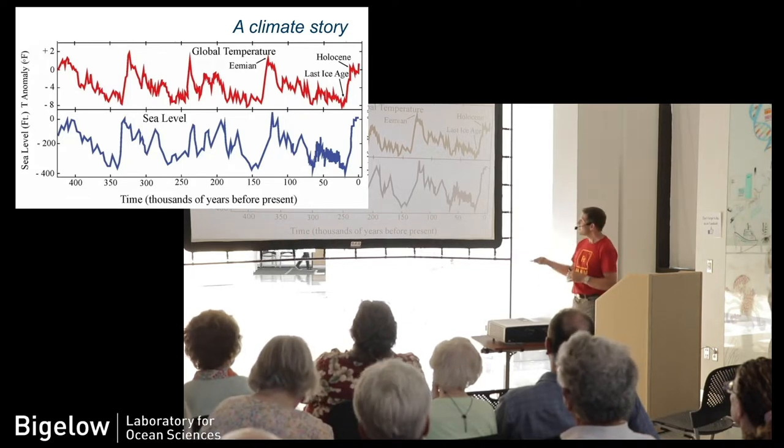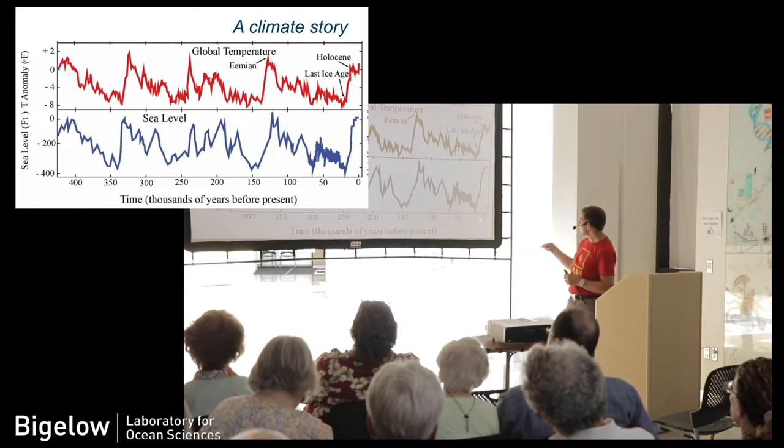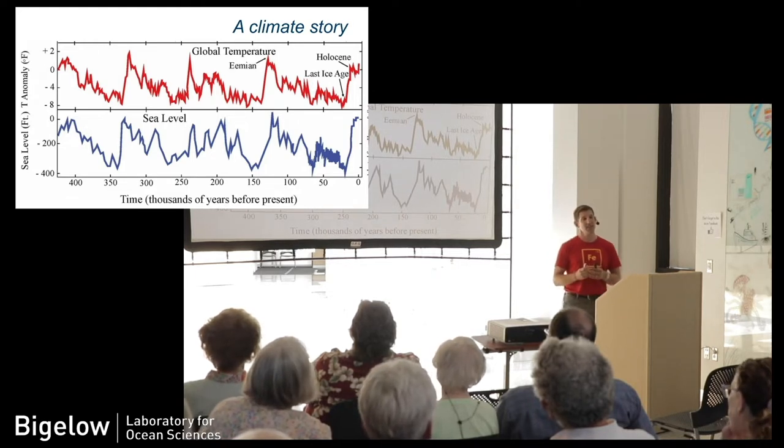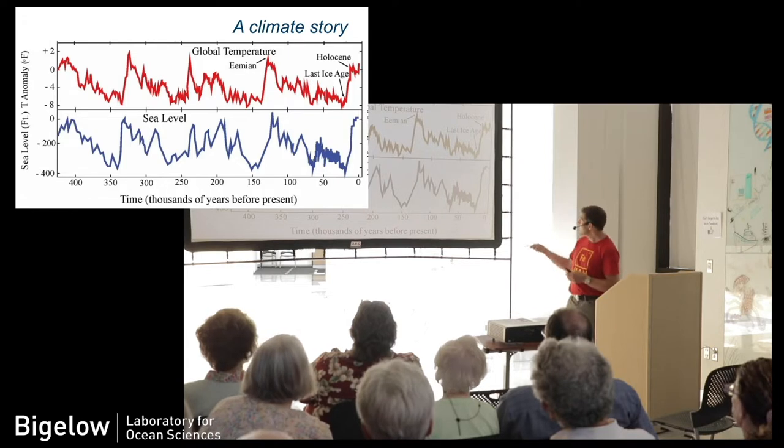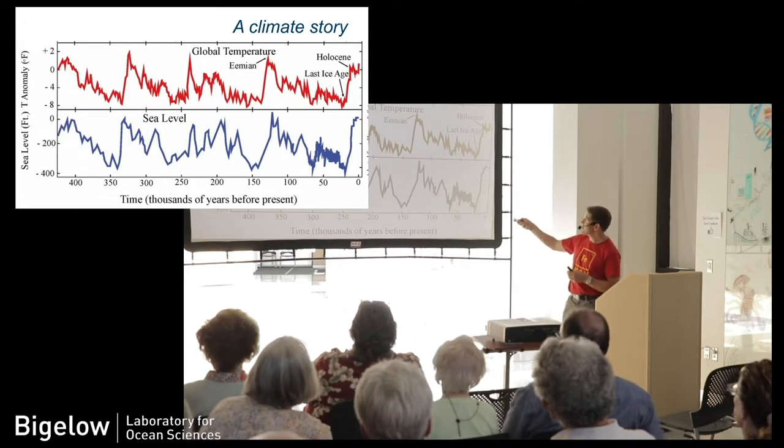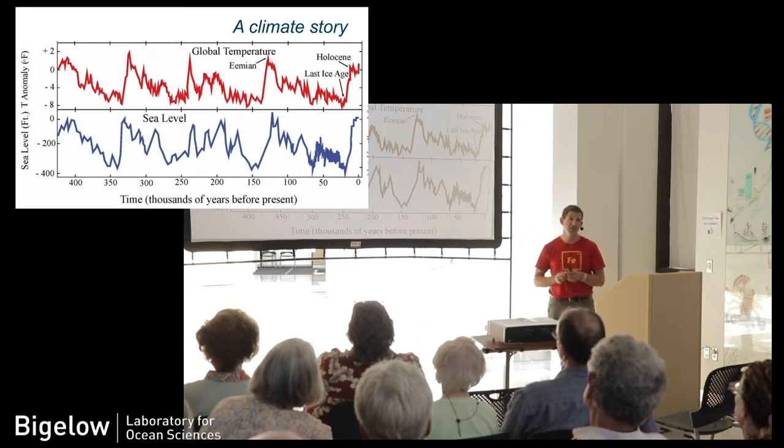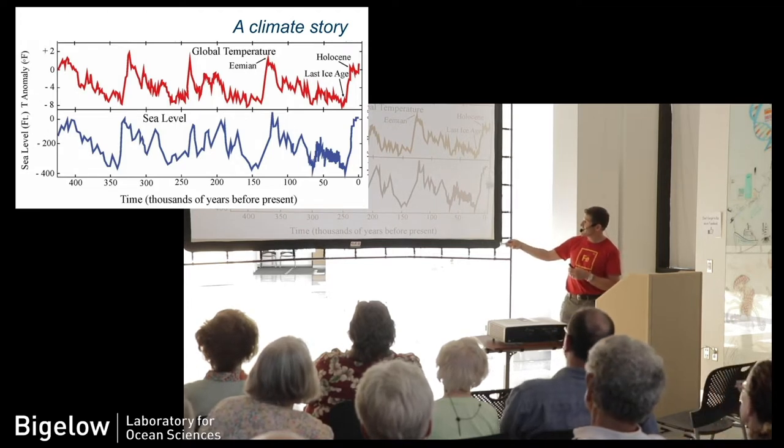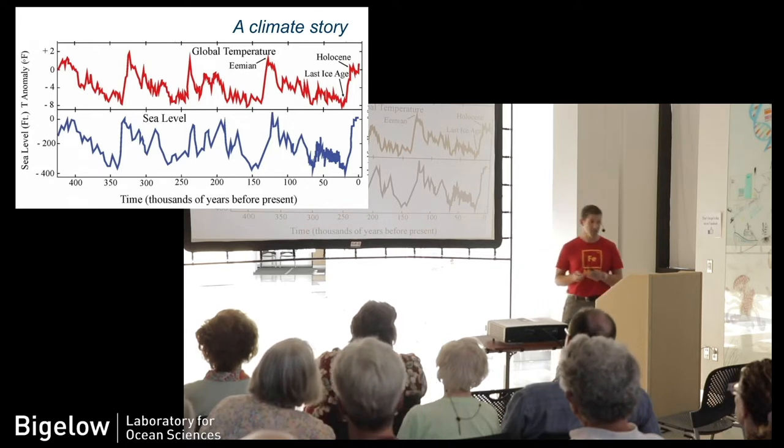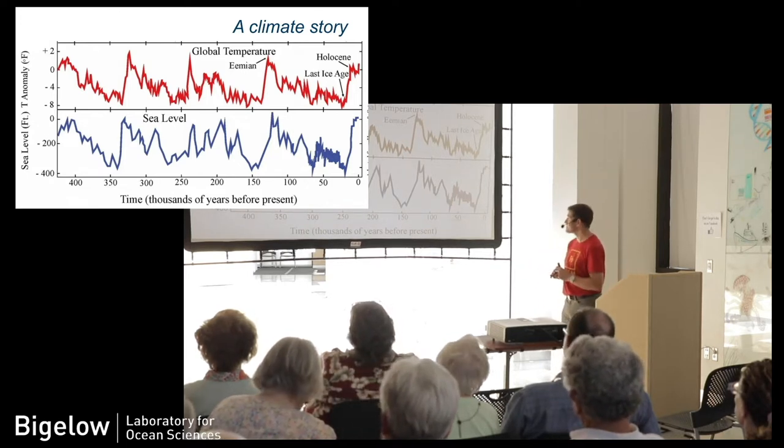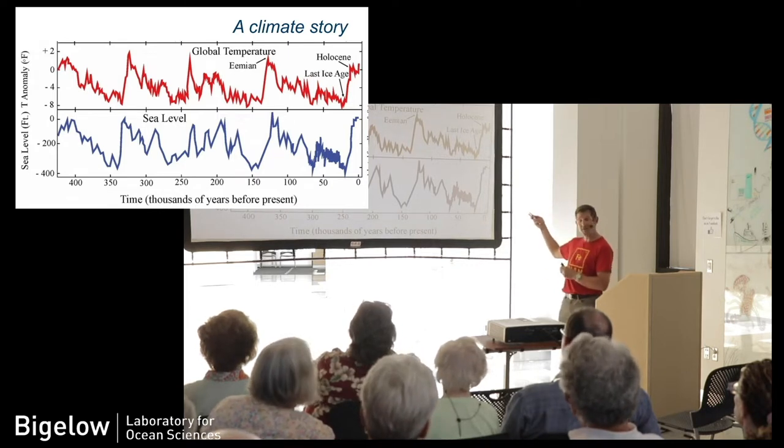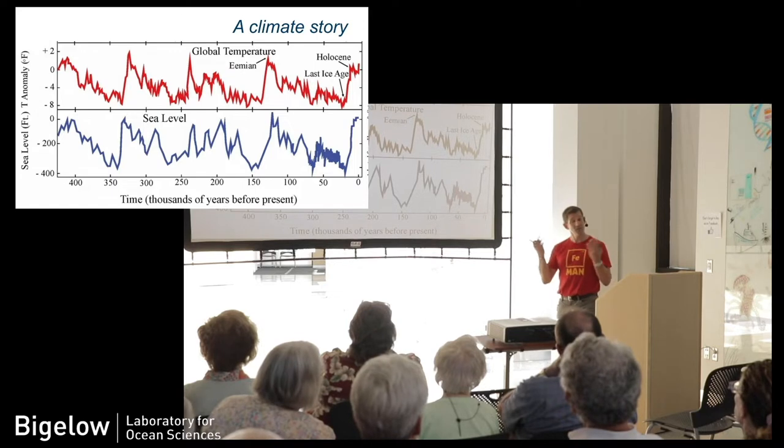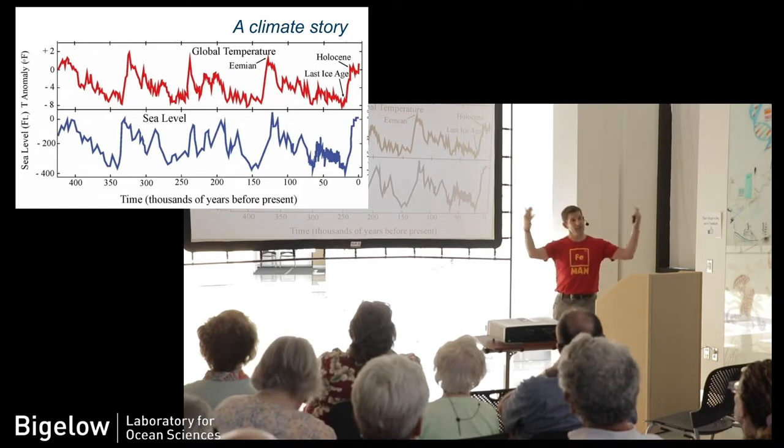This is data going back for temperature, global temperature, going back almost 450,000 years. This is data we get from looking at ice cores in Antarctica. As we go back in time, we can see these variations, these cycles in global temperature. There are cycles of maybe about 8 degrees Fahrenheit on average. Those cycles correspond with changes in sea level. 20,000 years ago, we had our last ice age. It was significantly colder. The sea level was significantly lower because a lot of that water was locked up in glaciers that were on land.